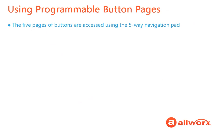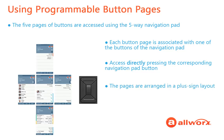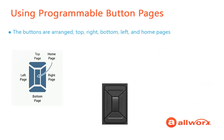The five programmable button pages are accessed using the five-way navigation pad. Each of the five pages is associated with one of the buttons of the navigation pad and can be accessed directly by pressing the corresponding navigation pad button. Think of the pages as arranged in a plus sign layout — you have direct access to each page and do not need to scroll. The five pages are arranged as the top page, right page, bottom page, left page, and home page, going clockwise around the navigation pad.